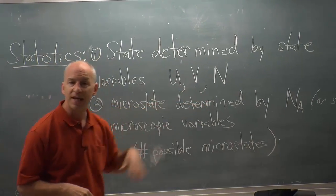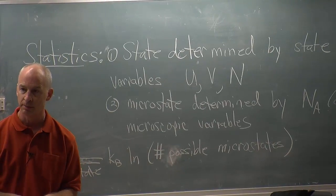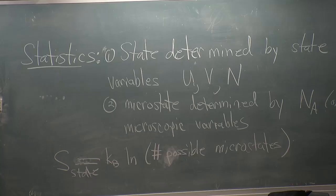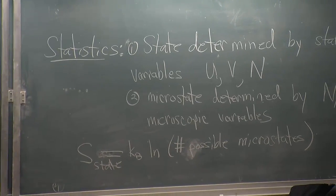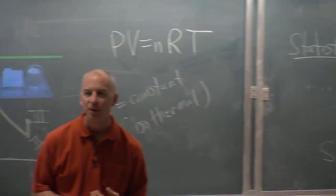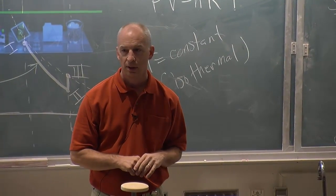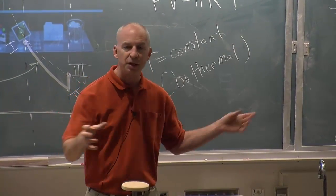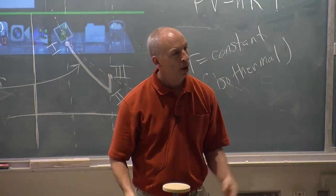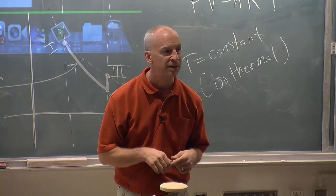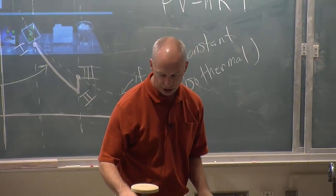So the number of ways of arranging particles in a volume, but there's a total fixed energy, and so it also depends on the number of ways of distributing the energy amongst the particles. Two of the particles can have all the energy and the rest none. All the particles can share the energy equally. There's all sorts of ways of arranging the energy sharing.